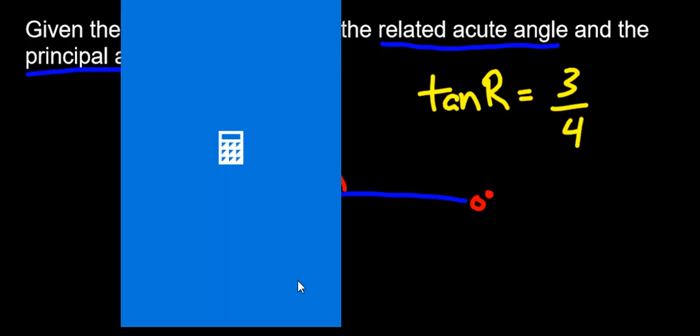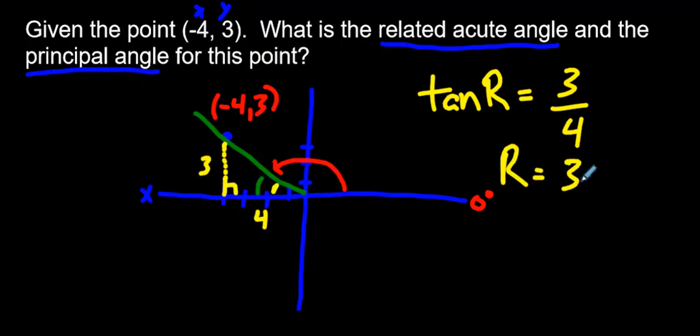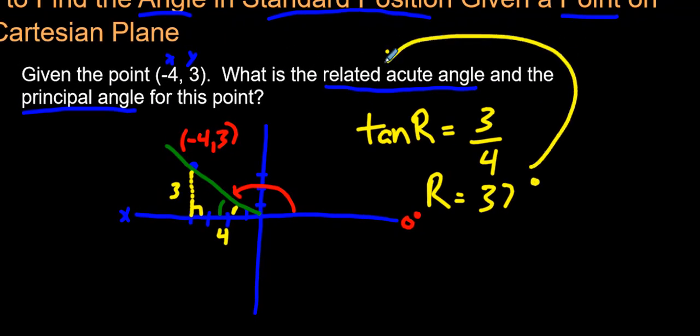So if you take your calculator, and make sure it's in degree mode, 3 divided by 4 is 0.75. Find the tangent. Use the inverse tan button. And sometimes that means pushing the shift button on your calculator. On this particular calculator, where is the inverse button on this calculator? Here it is. 10. There it is. 37 degrees. I'm rounding it off to 37 degrees, folks. So R is 37 degrees. I know that the related acute angle is 37 degrees. I have just solved the one part, the first part of this question.